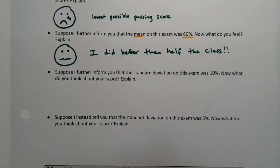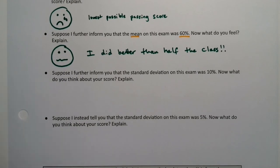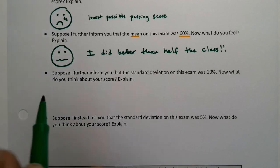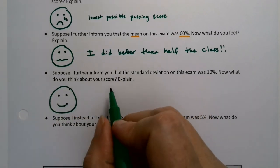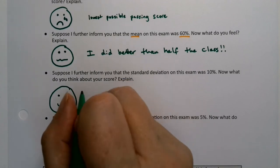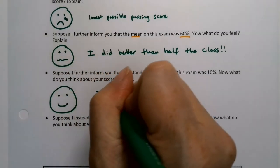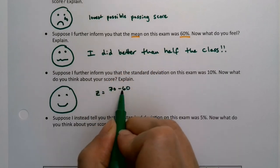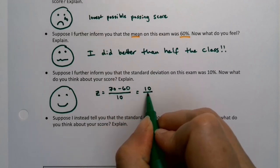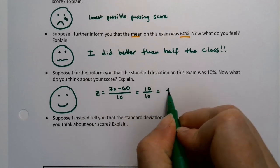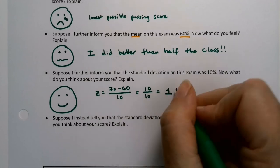All right, suppose I further inform you that, hey, a standard deviation on this exam was 10%. Now what do you think? Well hey, if the mean was 60, I scored 70, I scored one standard deviation above the mean. That's what a z-score is. So your z is 70, take away 60, because you scored 70, minus 60, and you divide it by the standard deviation. So you scored 10 above the mean, a standard deviation is 10, so you scored one standard deviation above the mean.